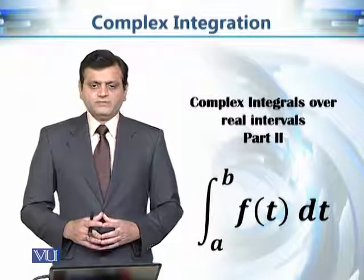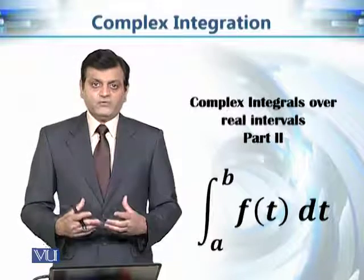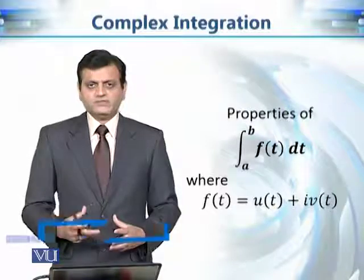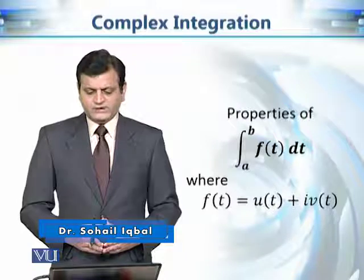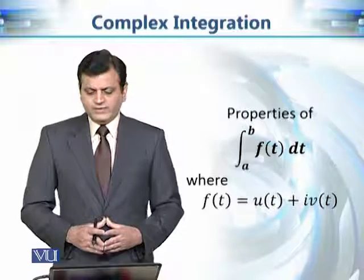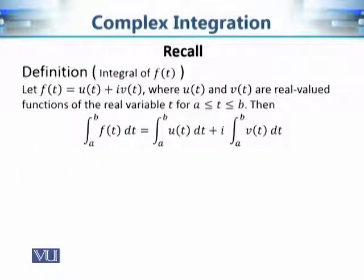This is the second part of our discussion where we consider the integration of complex-valued functions of one variable over the real interval a to b. In this module we will discuss further properties of these integrals. If f(t) = u(t) + iv(t), then we integrate this function over the closed interval a to b by integrating u(t) and v(t) separately from a to b.